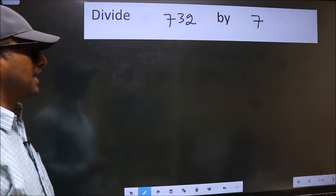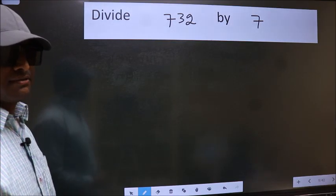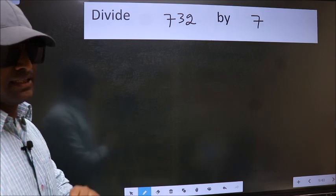Divide 732 by 7. To do this division, we should frame it in this way.